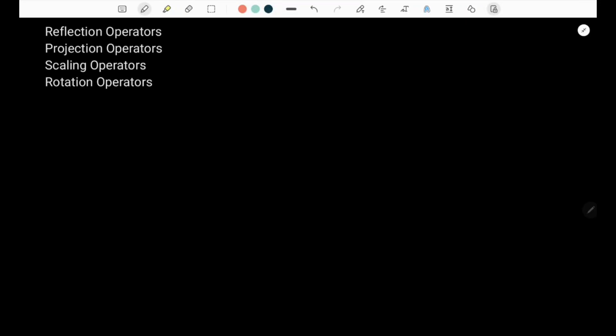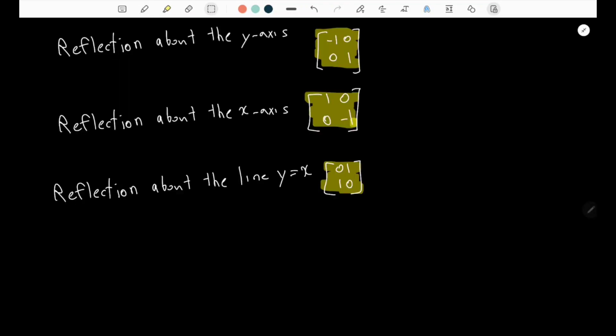In this video we'll be going through matrix operations which are reflection operators, projection, scaling, and rotation. Let's go through reflection first. There are three types of reflection which are across the y-axis, x-axis, and the line y equals x.